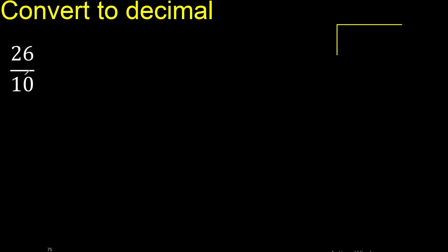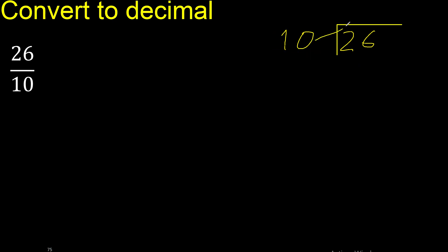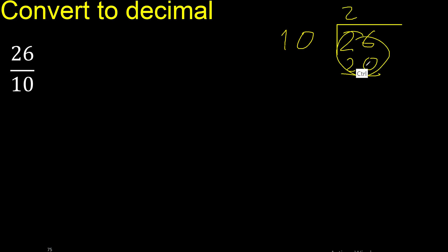26 divided by 10. 26 is not less than 10, therefore 10 goes in. Multiply by which number is nearest to 26 but not greater: 10 multiply by 3 is 30, which is greater, therefore 10 multiply by 2 is 20. Subtract: 26 minus 20 equals 6. There is no number that goes in further.